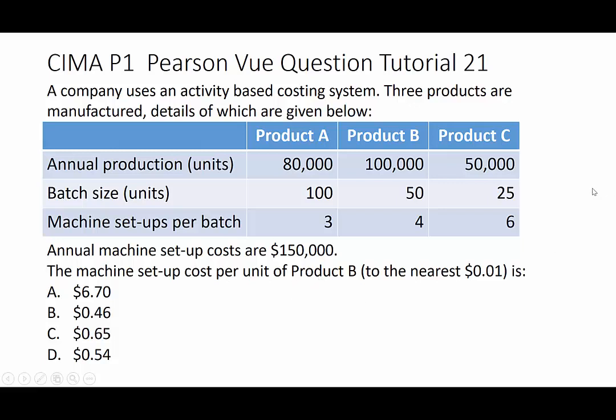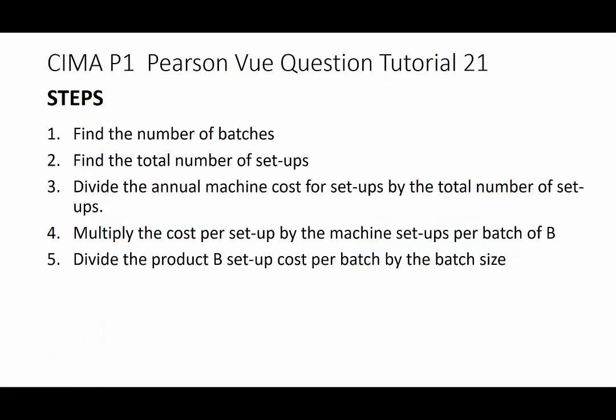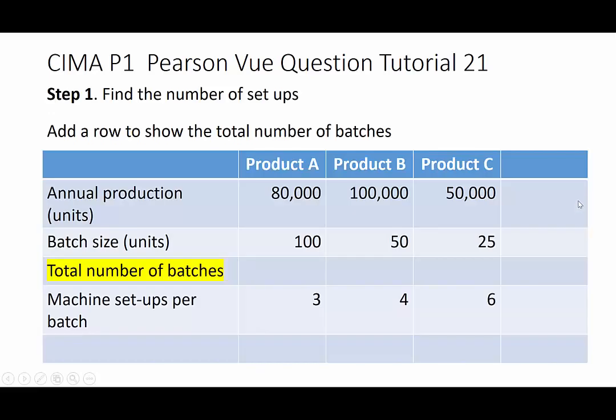The question asks for the machine setup cost per unit of product B, giving us four alternative answers. We need to address it using five steps: first, find the number of batches; then find the total number of setups; divide the annual machine setup cost by the total number of setups; multiply that cost per setup by the machine setups for a batch of B; and finally divide by the batch size to get a unit cost.